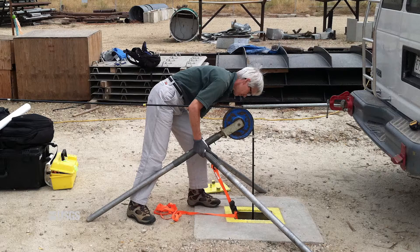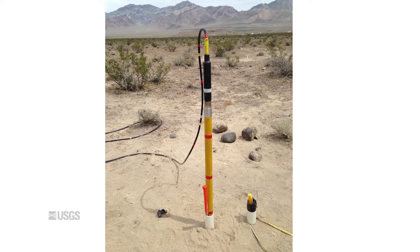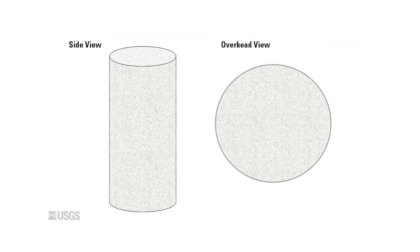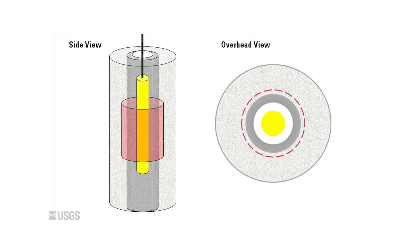Different borehole NMR tools are sensitive to different radial distances from the tool. Therefore, different diameter boreholes require different tools. Each tool is sensitive to a specific distance from the center of the tool. Before you install your borehole, you have the undisturbed subsurface formation. When a borehole is drilled, the area immediately surrounding the borehole is also disturbed. When we conduct borehole NMR logging, each tool is sensitive to a different radial distance in order to take measurements of the undisturbed formation.